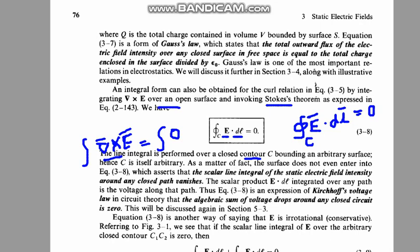The line integral is performed over the closed contour C bounding an arbitrary surface. Hence, C itself is arbitrary. As a matter of fact, the surface does not even enter into it, which asserts that the scalar line integral of the static electric field intensity around any closed path vanishes.